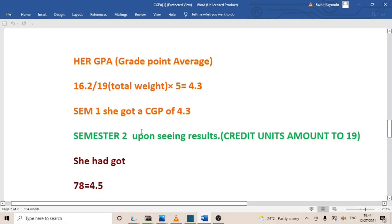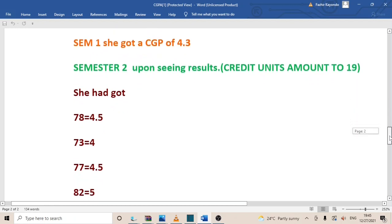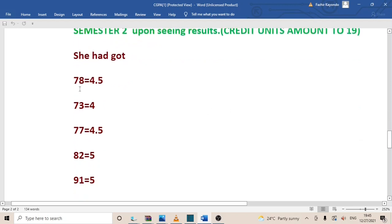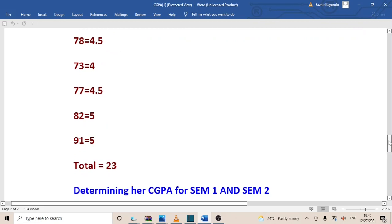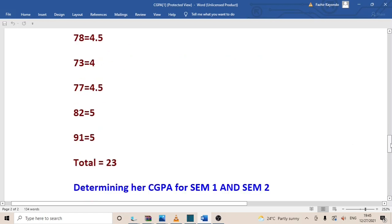For semester two, that's when we are calculating the CGPA, which is accumulating. So upon her going to the notice board, seeing her results, or maybe she would have used her student portal to see her results, the credit units of that semester, assuming that they also amount to 19. Upon seeing the results on the notice board, she had gotten maybe in a particular course unit a 78, which is equal to 4.5, 73 which is equal to 4, 77 which is 4.5, then 82 which is equal to 5, and even a 91 which is equal to 5. So that's what she saw on the notice board. Then what they do, they add all this.